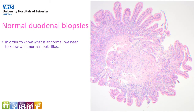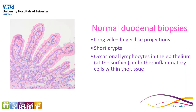In order to know what abnormal tissue looks like, first we need to know what the normal tissue looks like, and here we have a picture of a normal duodenal biopsy. Looking at this on higher power, we can see that the duodenum has these long villi, which are finger-like projections which extend into the lumen of the duodenum, increasing the surface area and improving absorption of nutrients from the material passing through. It has these short crypts at the bottom, and then in the epithelium there are these small blue dots, which are lymphocytes, a type of white blood cell.